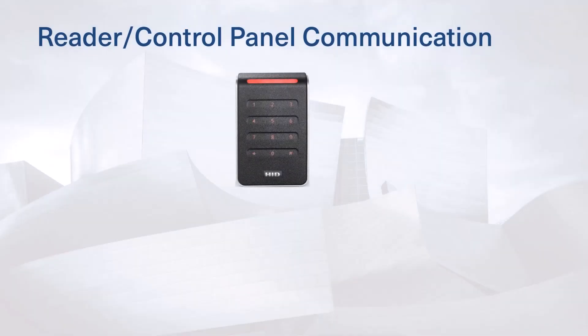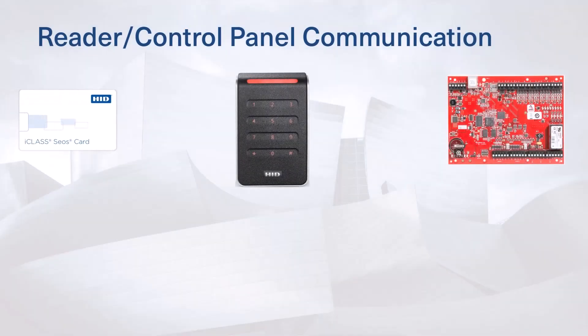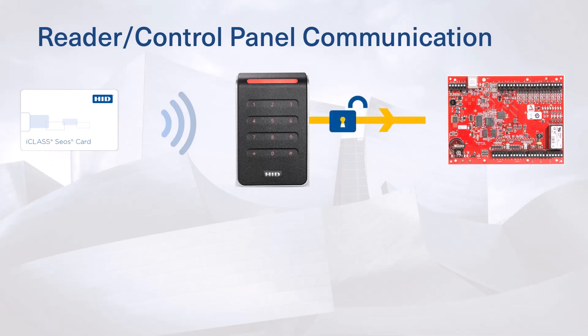Most existing access control systems rely on Wiegand or clock and data legacy communications protocols for data flow between readers and control panels. Legacy communication protocols between the reader and the control panel are unsecure and unidirectional. Data from the reader is sent unencrypted to the control panel without the functionality to send data in the other direction. This means that after reading data securely from a CEOS-enabled card using secure identity objects, the data is sent to the control panel unencrypted and could potentially be intercepted by a third party with the right equipment.